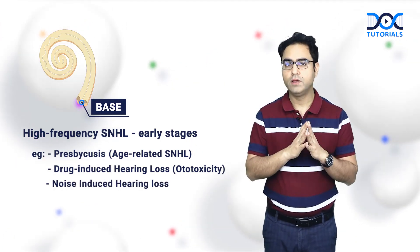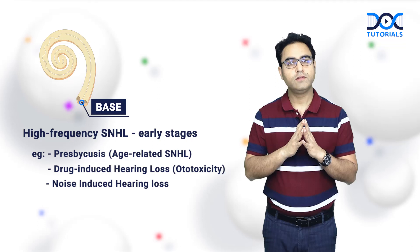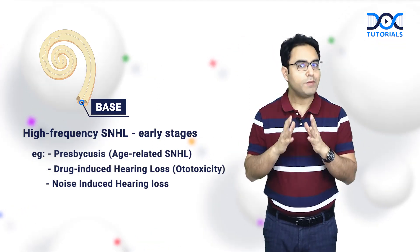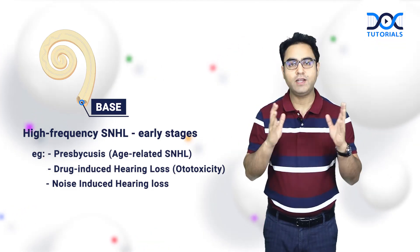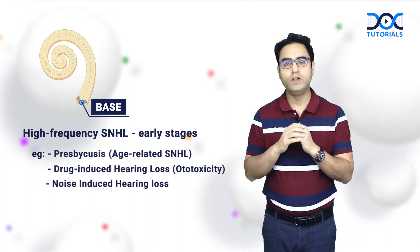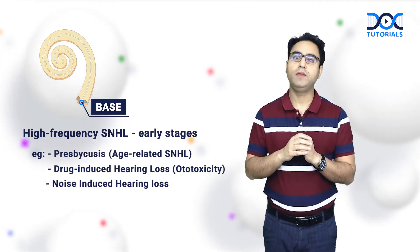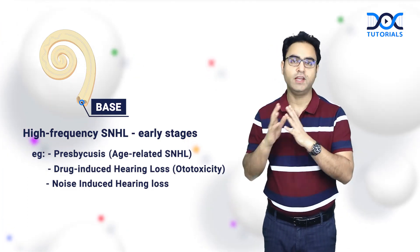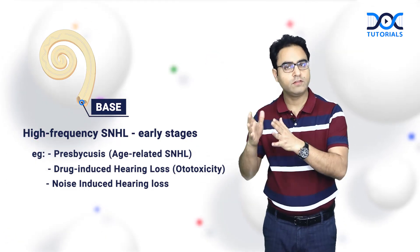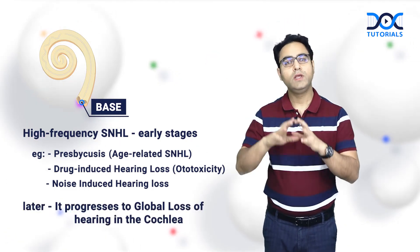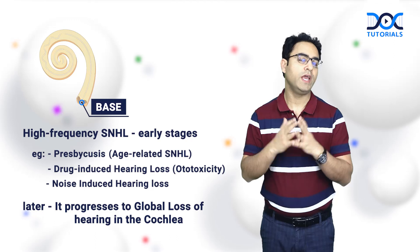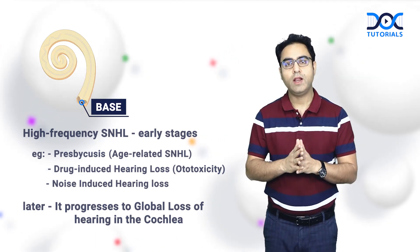Drugs, noise, and age — they damage the basal turn of the cochlea first. So in the earlier stages, you will see high frequency SNHL. But as the disease progresses, it is going to cause a global loss of hearing in the cochlea.